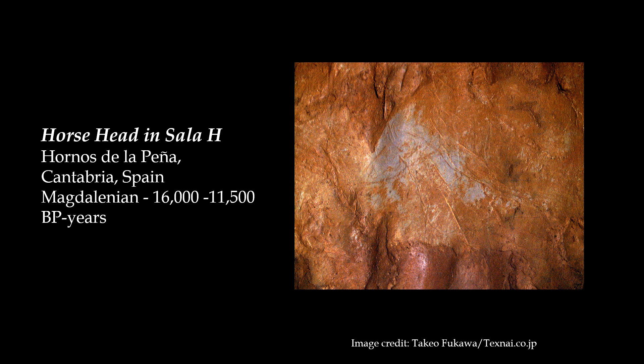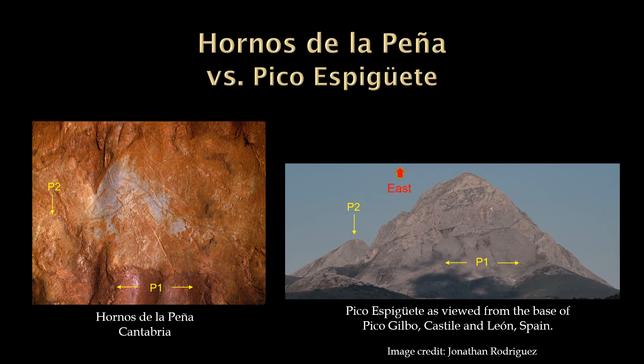Back on the Iberian Peninsula, we find the head of a bodiless horse facing in the opposite direction on another wall in Ornos de la Peña. This is not the missing head of our previously pictured pregnant mares. Had this bodiless horse not been introduced, I could have titled this presentation 'The Mystery of the Headless Horse.' This Ornos de la Peña horse head and neck is a close match with Pico Espagueti, as viewed from the base of Pico Gilbo in Castilla and León, Spain. In addition to the pareidolia horse head and neck shape on Pico Espagueti, the cave artist also captured the fore feature at P1 and the rear peak at P2. The similar natural feature at P1 on the cave wall is what probably drew the attention of the artist to choose this geological canvas.